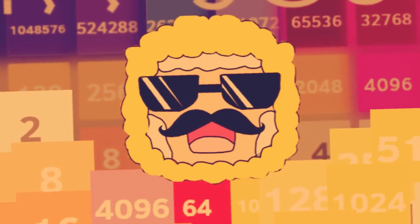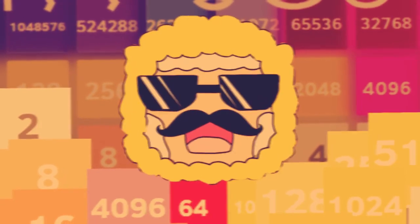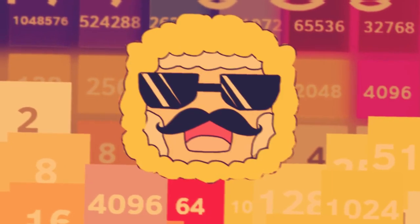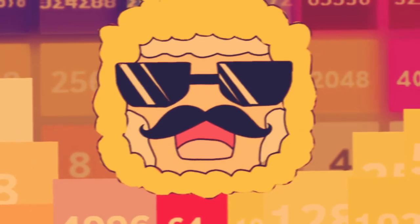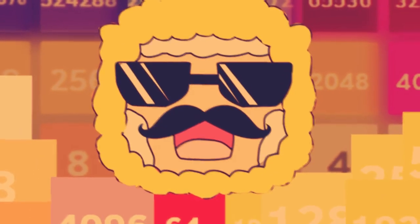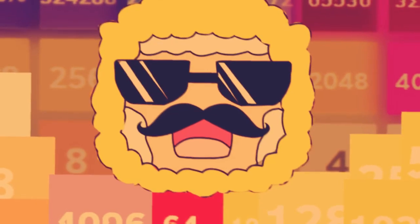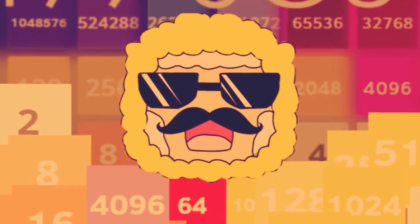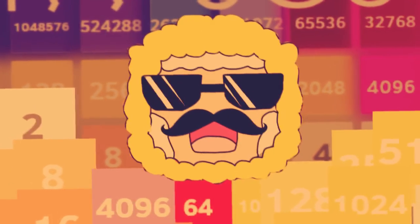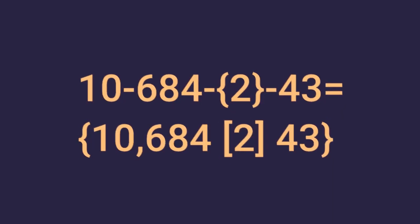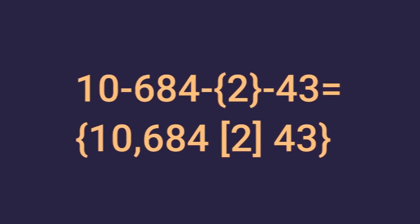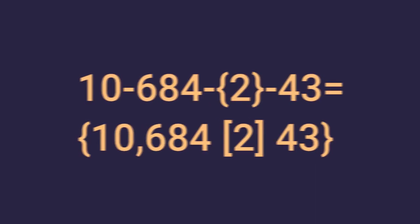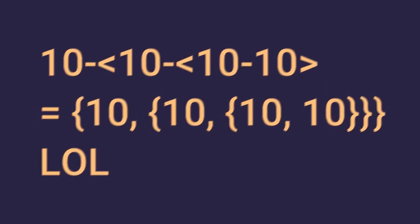Everything on the link notation at the base line is the same as the Bird's Array Notation. So what does a dimensional array notation look like in link notation? It looks like this. When the link notation is between numbers, they use arrows.